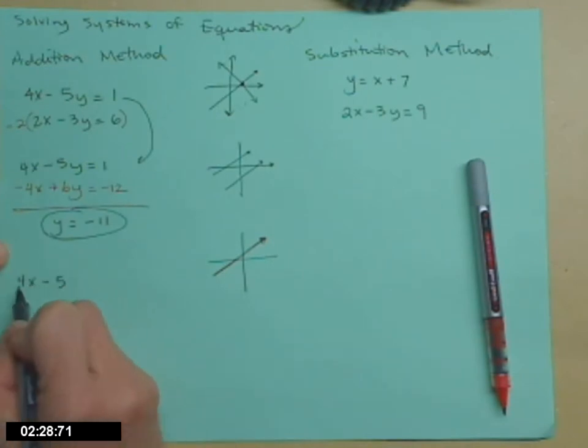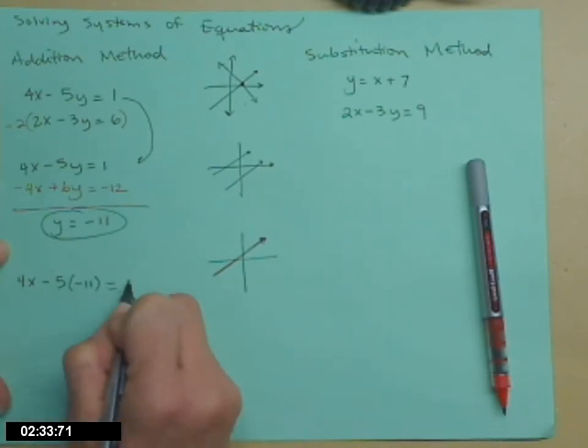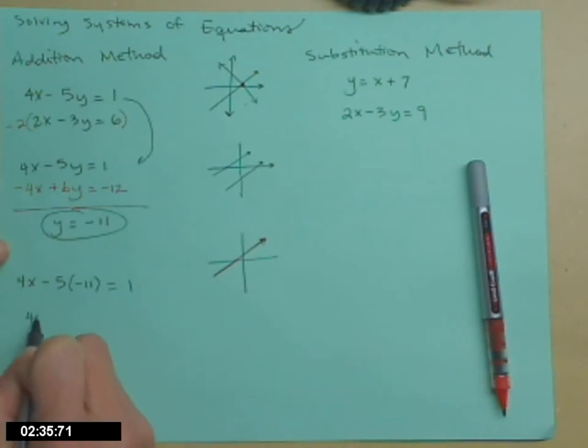4x minus 5y. Y is now being played by the number negative 11. Equals 1. 4x, do the multiplication. Plus 55 equals 1. Subtract the 55. 4x equals negative 54.